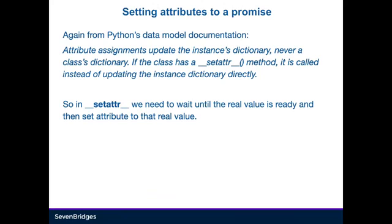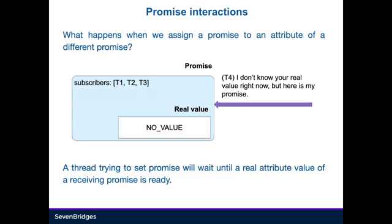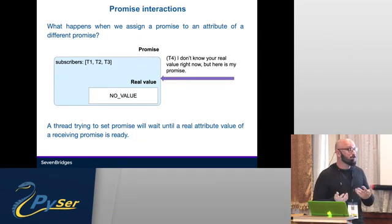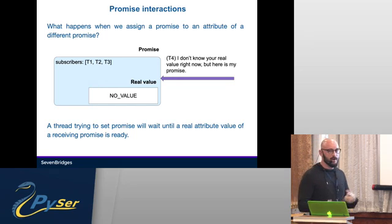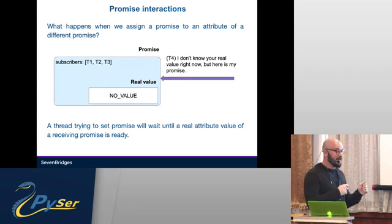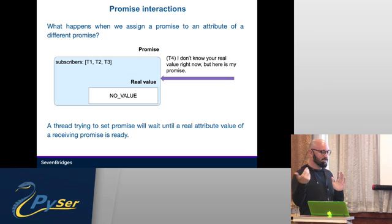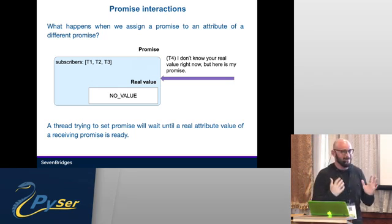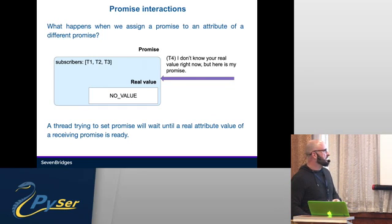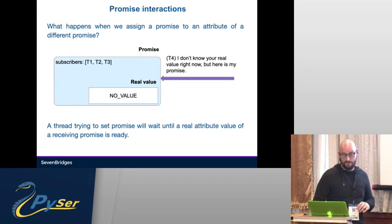Setting attributes on a Promise is very similar. Just as you have __getattr__, you have __setattr__, which is called instead of updating the instance dictionary directly. It gives you the ability to control assignment when you want to assign a value to an object wrapped by a Promise. Things get complex when two Promises interact: if you want to assign a value that is itself a Promise to an attribute of a different Promise, the first Promise on the receiving end would have to wait and block the setter's thread until the value is known. It gets tough to follow all the thread interactions when you have many Promises in your code.